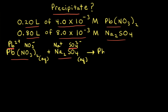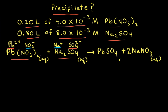So we write in PbSO4 after we cross over our charges. The other product would be sodium nitrate, NaNO3. To balance the equation, we need a two in front of NaNO3. Since nitrates are soluble, sodium nitrate is an aqueous solution. And lead sulfate would be our possible precipitate.